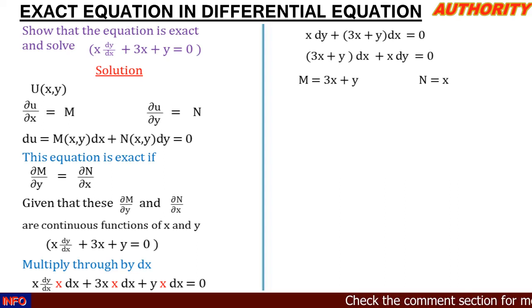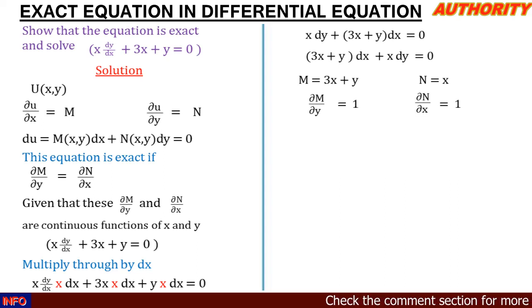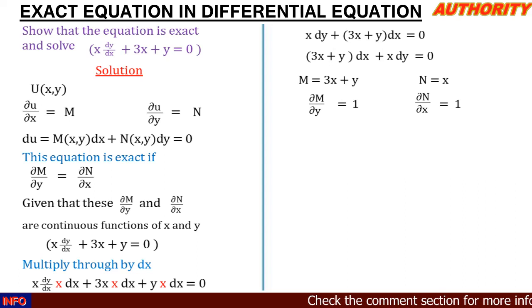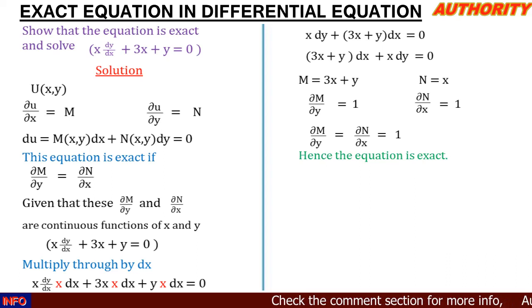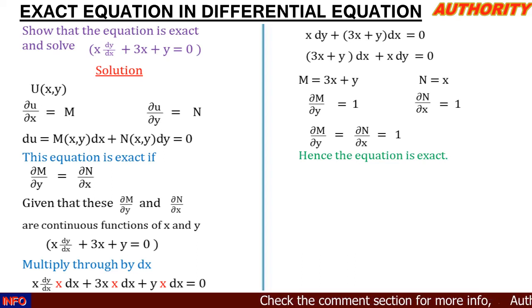When we differentiate M partially with respect to y: 3x is a constant, so differentiating only y gives us 1, so ∂M/∂y = 1. Differentiating N partially with respect to x also gives us 1, so ∂N/∂x = 1. Since ∂M/∂y = ∂N/∂x = 1, the equation is exact.